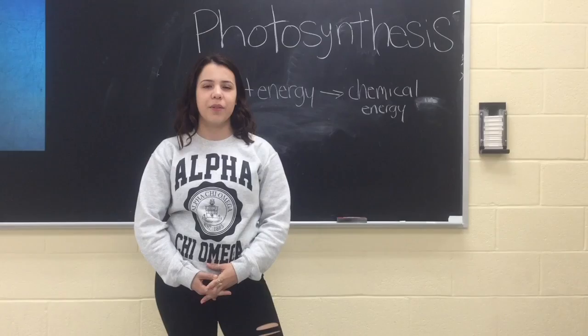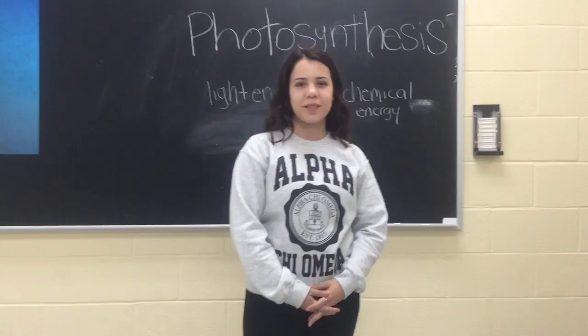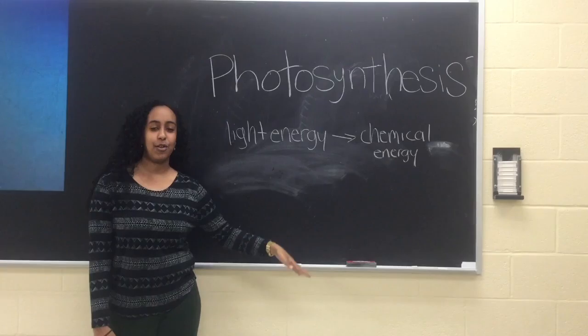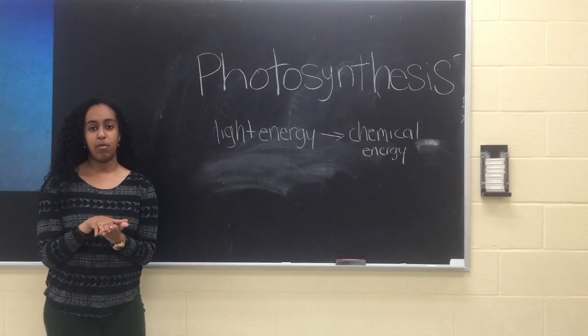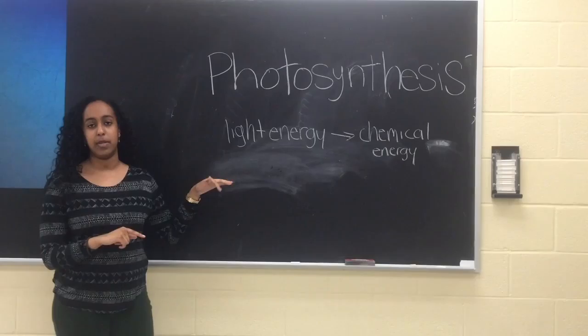Today we're going to talk about the structure and function of photosynthesis, specifically in plants and how the structure and function of the leaves affect plants. Photosynthesis is when you convert light energy into chemical energy, and it also produces ATP and glucose. The structure of the plant helps a lot in the process of photosynthesis because the plants have leaves and the leaves are flat, which gives them more surface area to absorb more light. The more light it absorbs, the more chemical energy it's going to make.